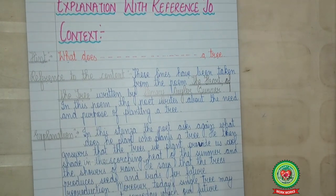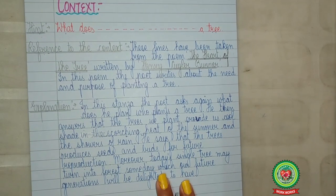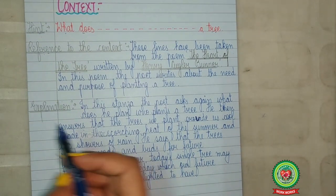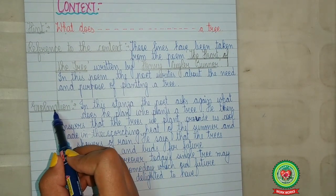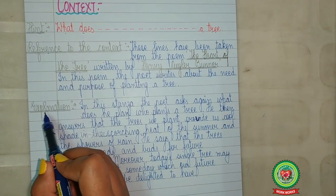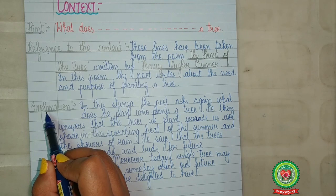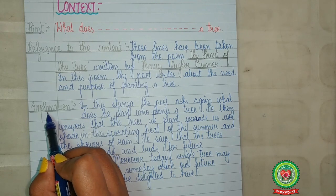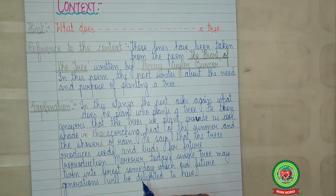After this, we will write down the explanation. The explanation will be written outside the margin line with a pencil and we will underline it, and write down the explanation as discussed.